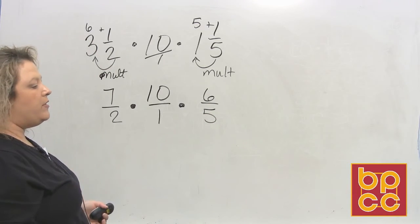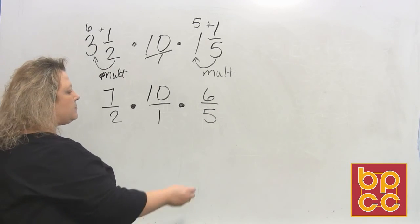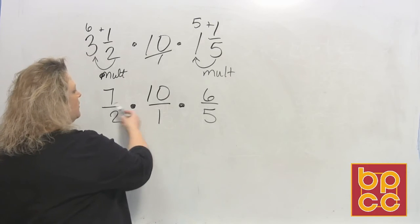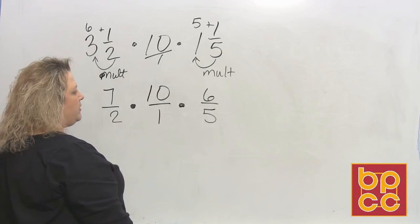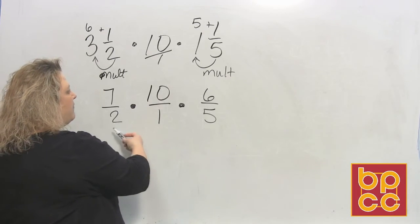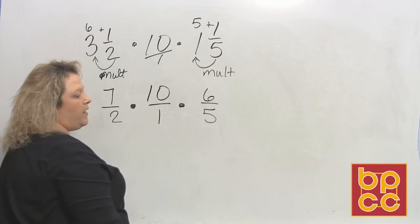Now we start our reducing process. So we say, okay, looking at my top numbers because I always look at the top first. Does 7 have anything in common with 2, 1, and 5? No.